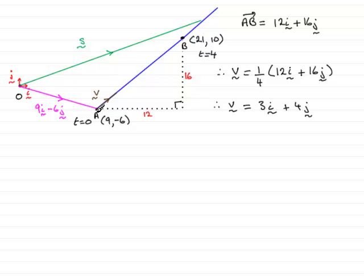We do 9I minus 6J plus T lots of the vector V. And that will get us the vector S.